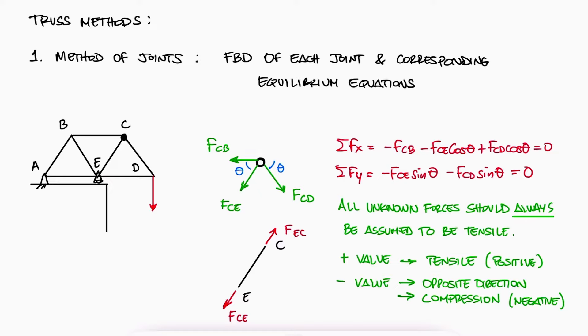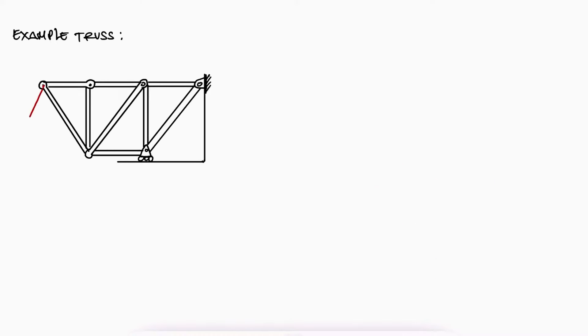This method consists of writing the equilibrium equations of each joint to solve for all internal forces. Usually, you begin where you have the most information, so for this example truss, where the only known force is the external load of 130 pounds located at point A, we would begin there, at point A.